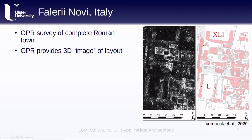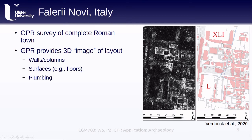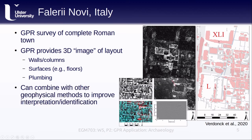In particular, we can identify things like walls and columns, as well as floors of buildings, and plumbing features like water pipes, shown in blue. Because we have a 3D view, we're able to differentiate between the reflectors that are higher up versus reflectors that are buried deeper. With other geophysical methods such as magnetometer surveys, we can improve our interpretation and identification of different features. Here we see an RGB composite of the magnetometer and GPR data, which highlights what is assumed to be an underground cistern. The GPR profile in particular highlights the vault of this buried feature.